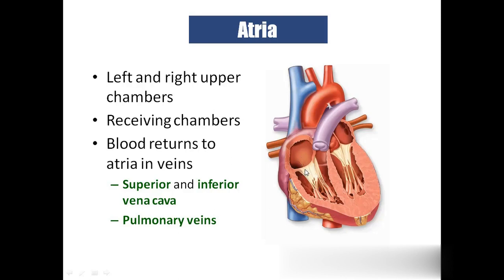On this side we have the right atrioventricular septum, and on this side we have the left atrioventricular septum. But these septa have walls: on the right side we have the tricuspid wall, and on the left side we have the bicuspid wall.